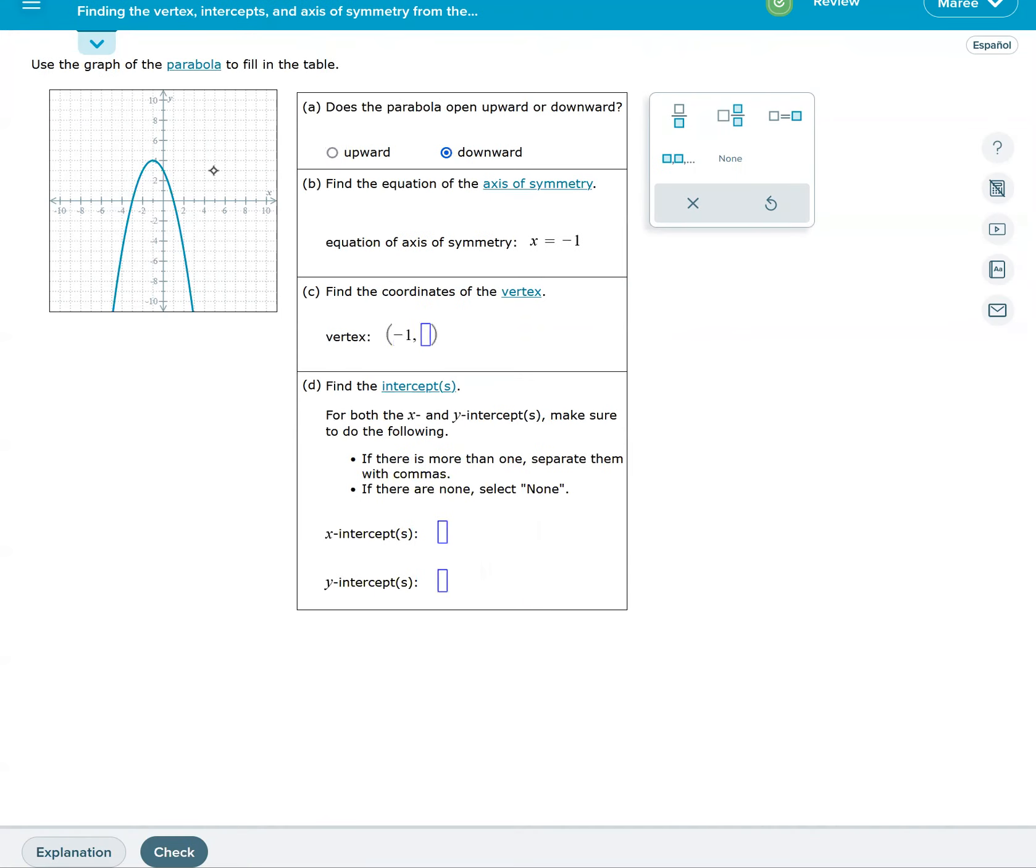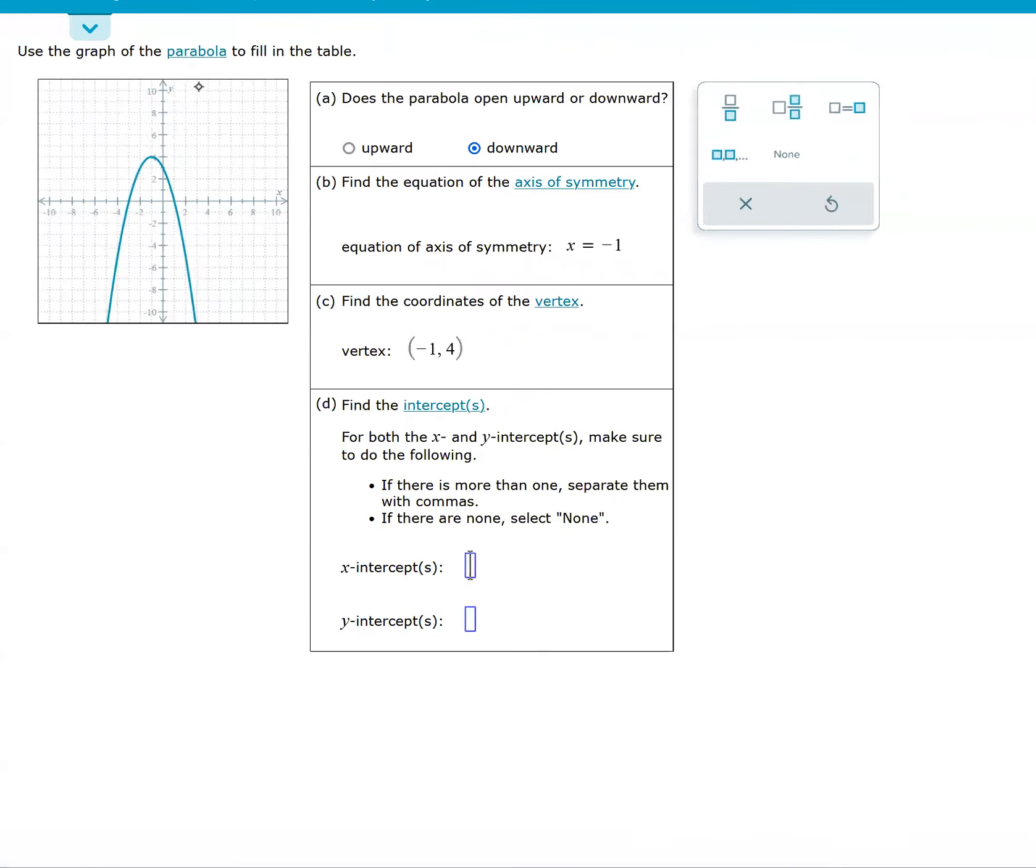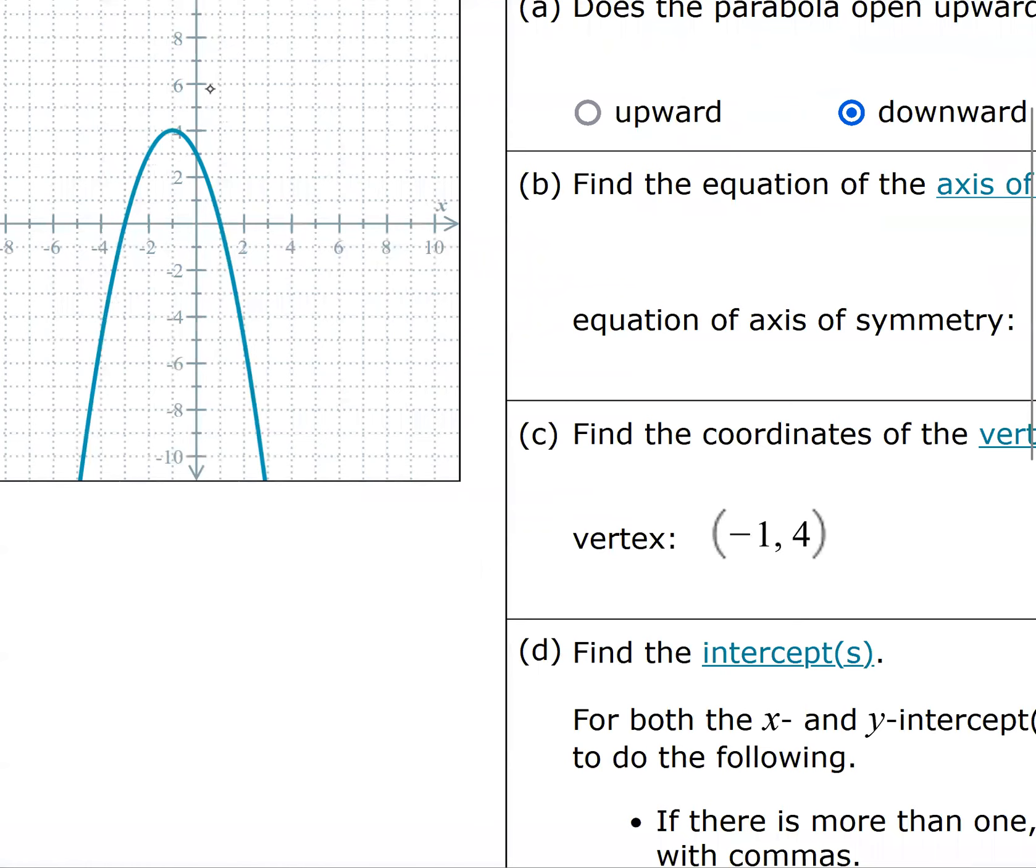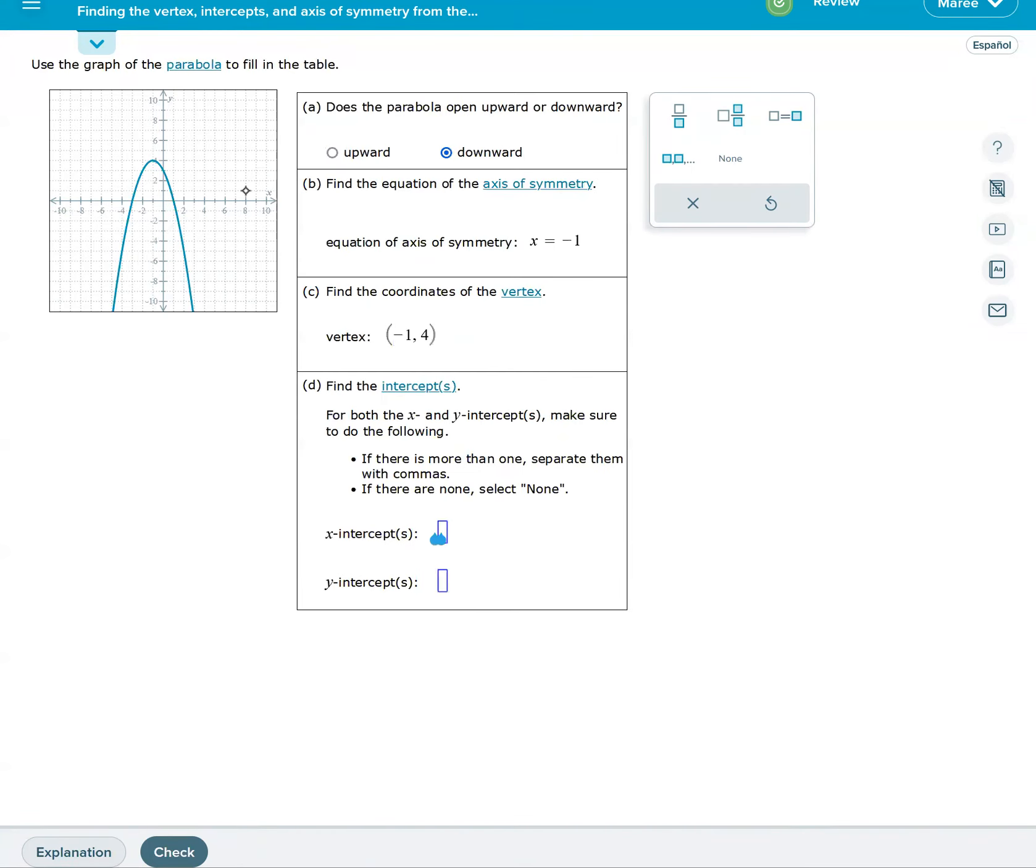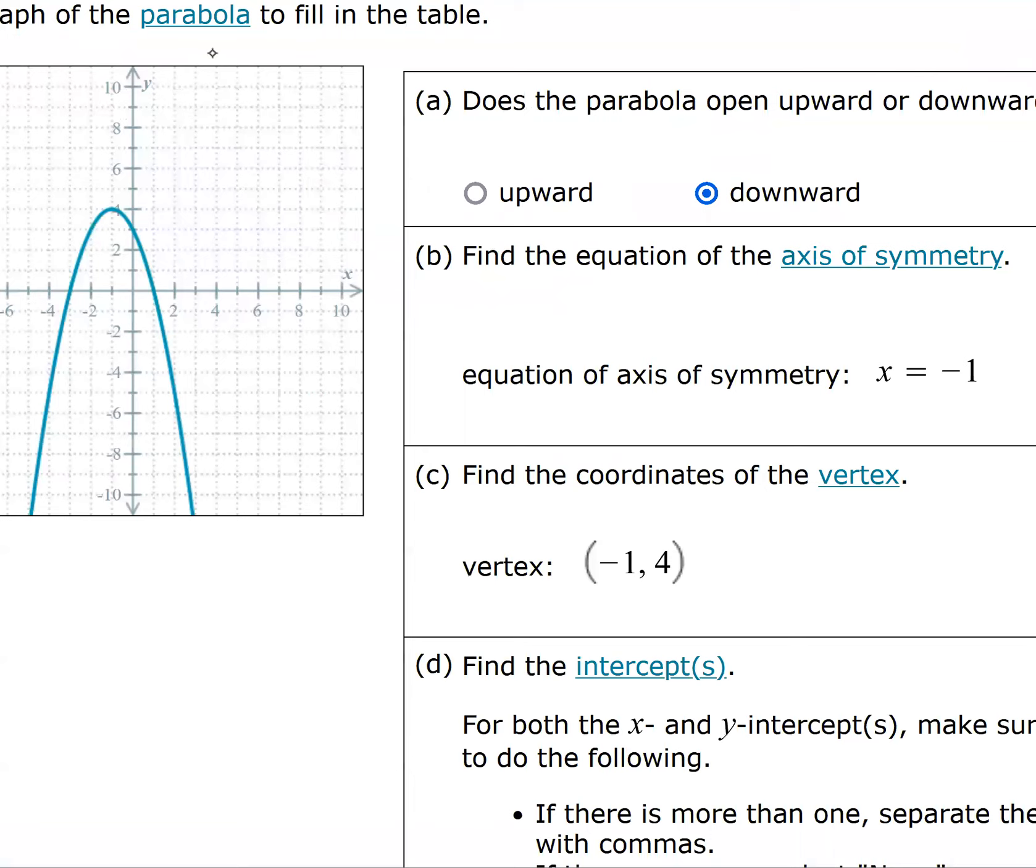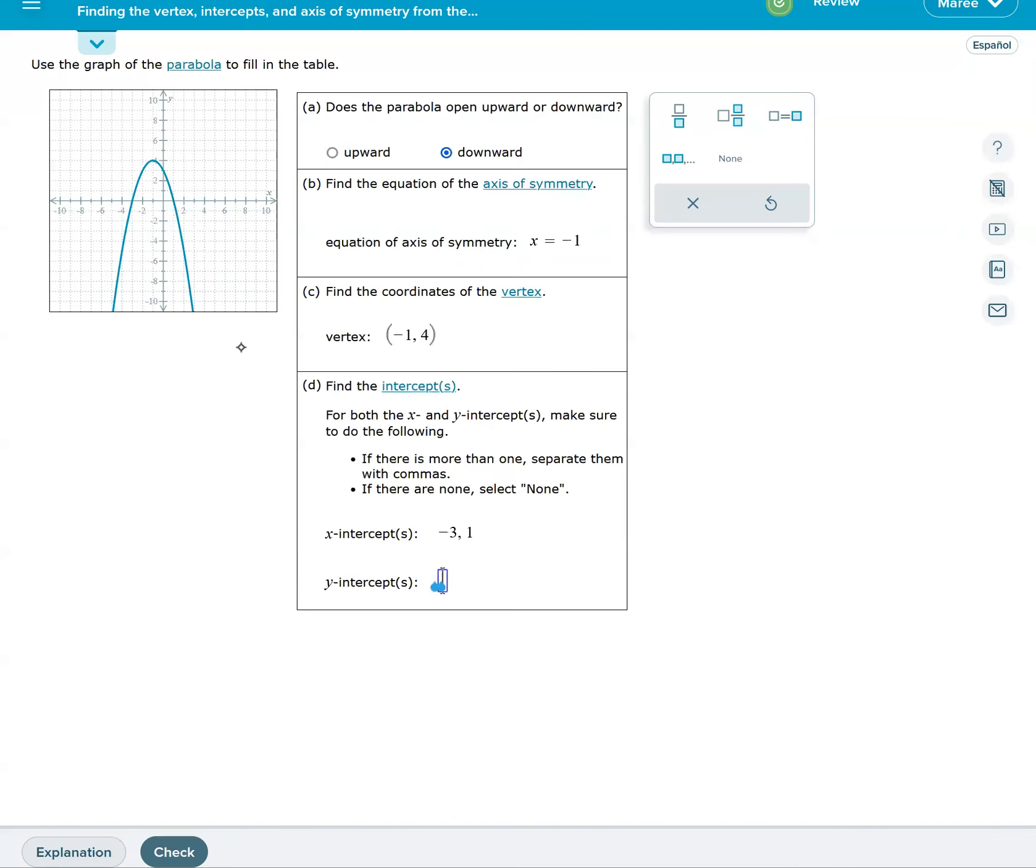The x intercept is -3 and a positive 1, so we'll put in -3, comma, and then a 1. The y intercept is one number, and that is 3, so we'll put in 3 for our y.